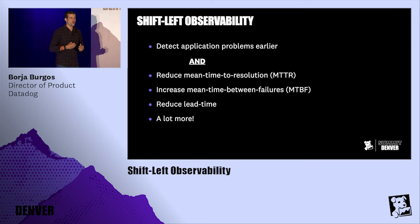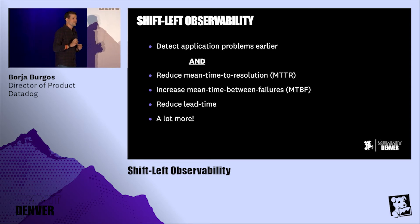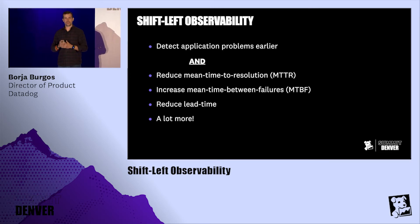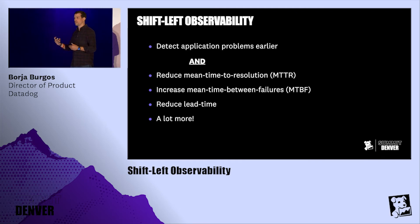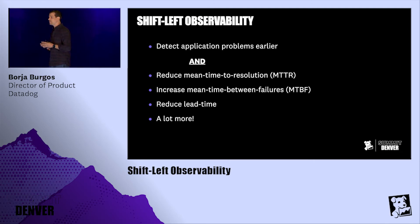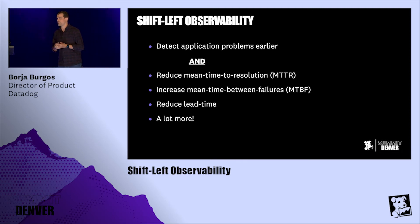Shift left observability not only allows us to detect application problems earlier, it's also going to shoot developer productivity and efficiency through the roof. We are all struggling to hire more and more developers, but we never stop to think — if we give our developers a 2% increase in their performance or efficiency, cutting down the time they sit idle waiting for builds or dealing with failing builds, we make them more productive. With shift left observability, we can get reduced mean time to resolution in CI, increased mean time between failures in CI, and a reduced lead time from commit to production.